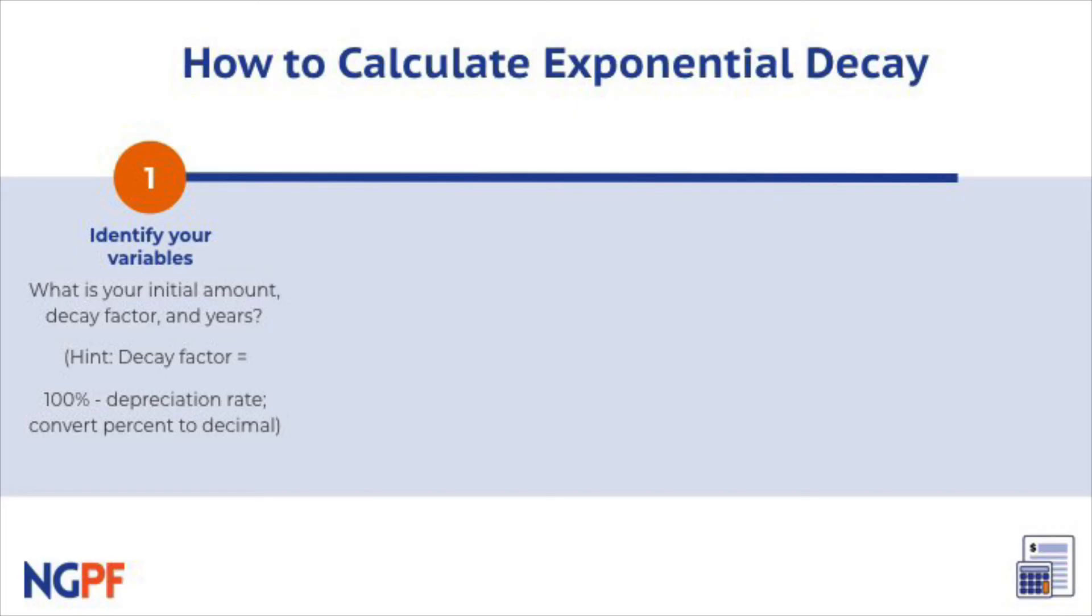Remember to convert your percent to a decimal when looking at your decay rate. Then you can use order of operations to carry out exponents first, multiplication next.